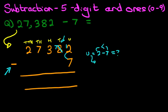So the units column has now become 12 minus 7. What is 12 minus 7? That's right, it is 5. Let's write that down.